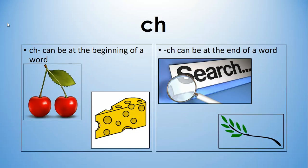The first digraph we're going to talk about is CH. CH can be at the beginning of words like cherry and cheese, and it can also be at the end of words like search and branch. I'm exaggerating the words to help make the sound clearer, but we would just normally say these words: search, branch.